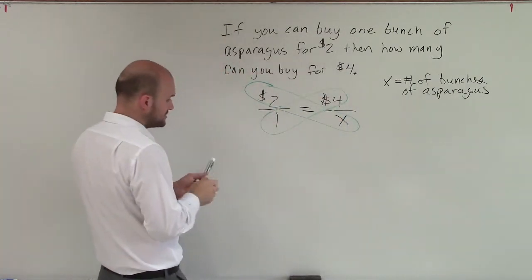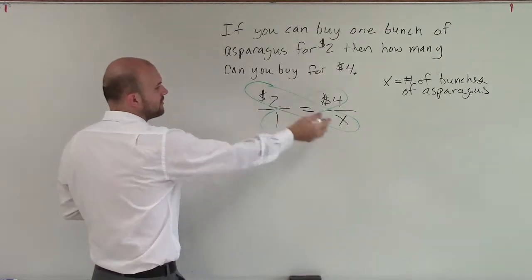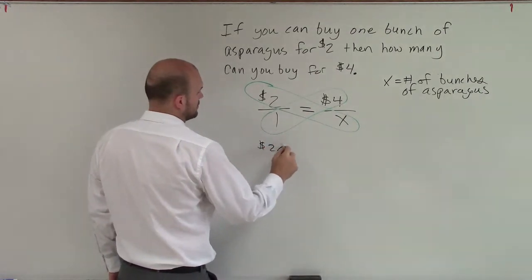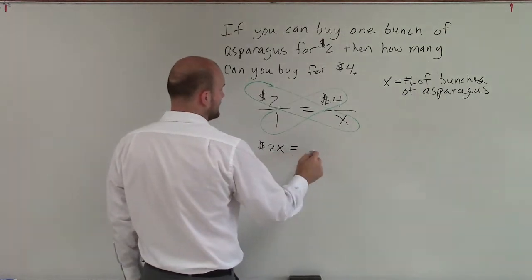So by applying cross multiplication, I am going to cross multiply across my equal sign, and I'll get 2x equals...